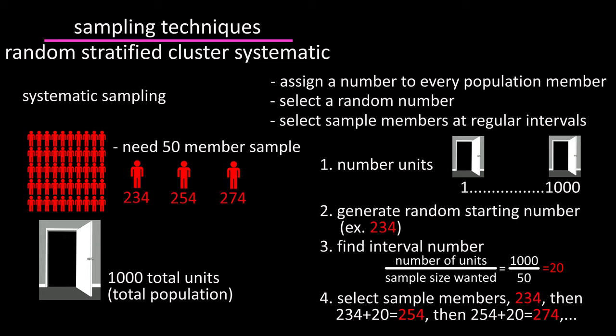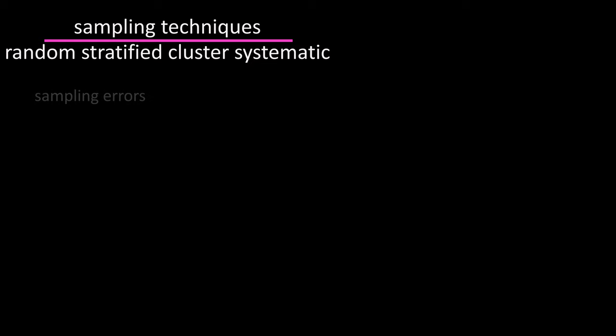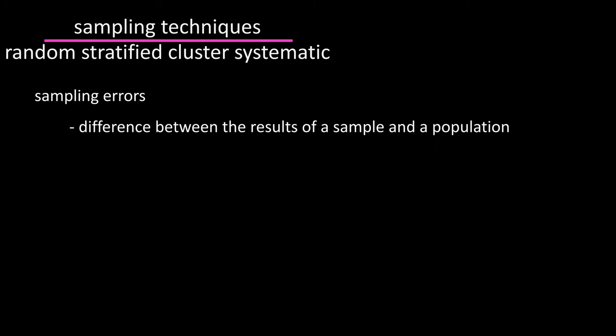This sampling method is easy to use if the population can be easily numbered. Another note: even when using the best sampling methods, a sampling error, which is the difference between the results of a sample and a population, can occur.